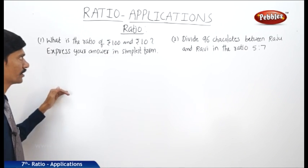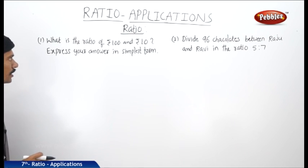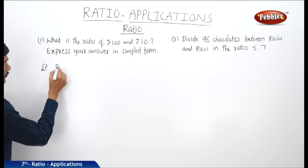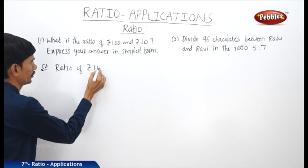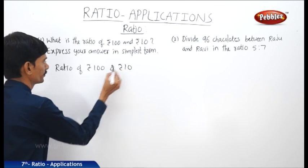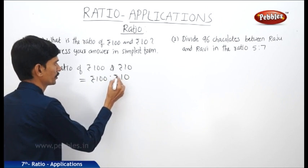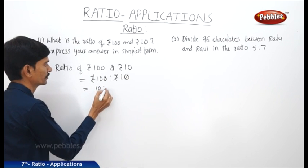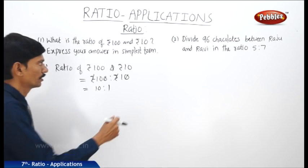Now let us solve a few problems based on the ratio concept. What is the ratio of 100 rupees and 10 rupees? Express your answer in simplest form. The ratio of 100 rupees to 10 rupees equals 100 is to 10. The rupee units cancel and the zeros cancel, giving 10 is to 1. So 10 is to 1 is the simplest form of the given ratio.